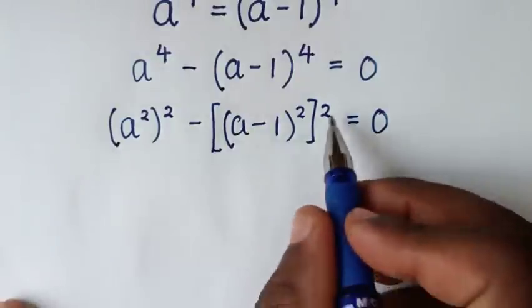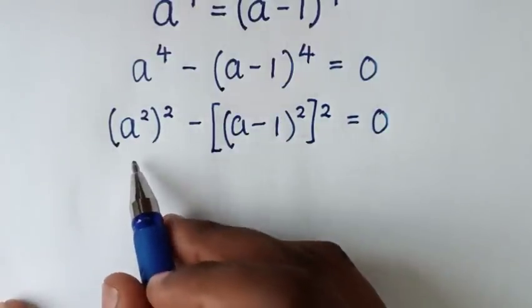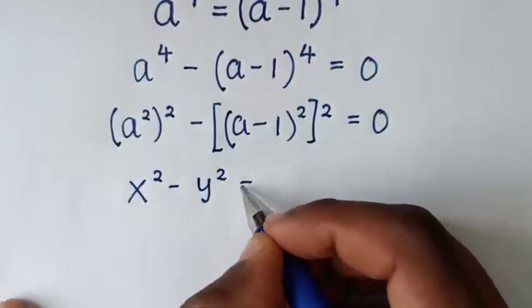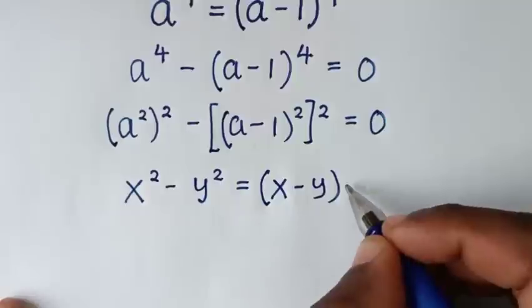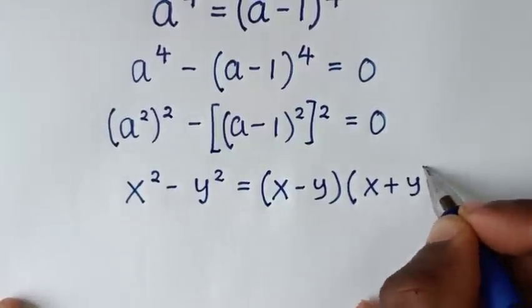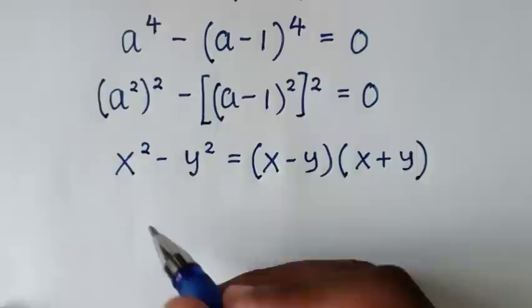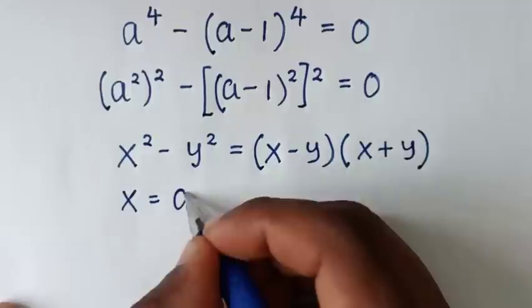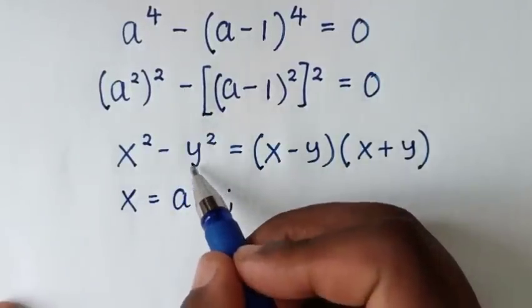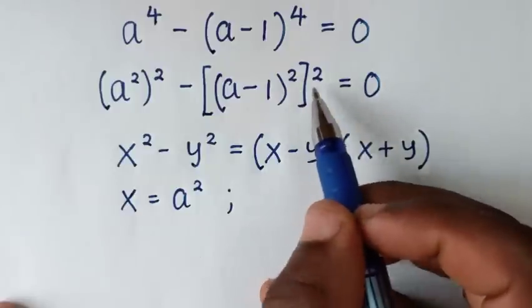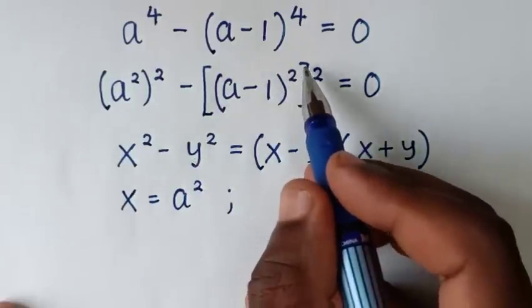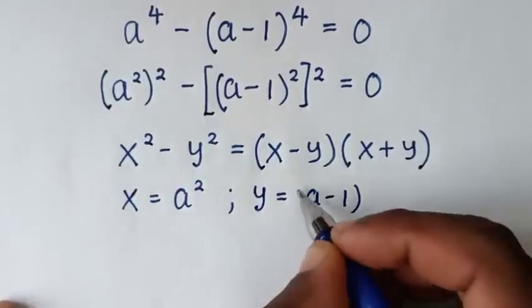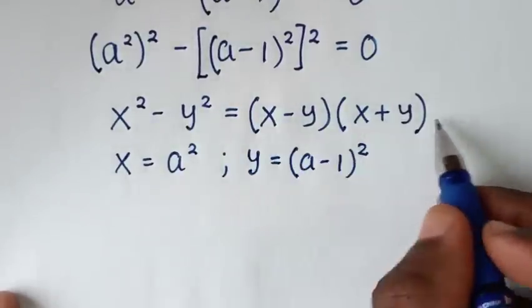Now from here, the left side is in the form of a perfect square. We'll apply the difference of squares rule: x² minus y² equals (x minus y)(x plus y). Comparing, x equals a² and y equals (a-1)².